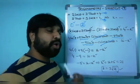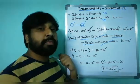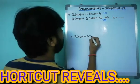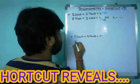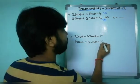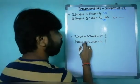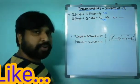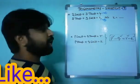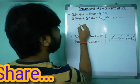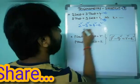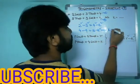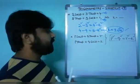Now the shortcut for secant-tangent problems: if p sec θ + q tan θ = r and p tan θ + q sec θ = k, then the formula is p² − q² = r² − k². Applying it here: 2² − 3² = 4² − k², so 4 − 9 = 16 − k², giving −5 − 16 = −k², so k² = 21 and k = ±√21. Done within seconds!